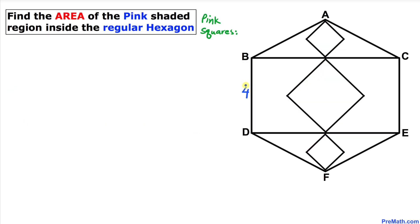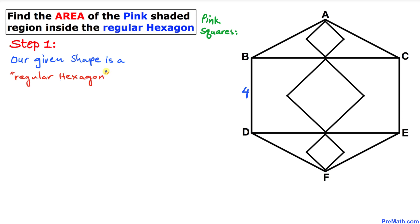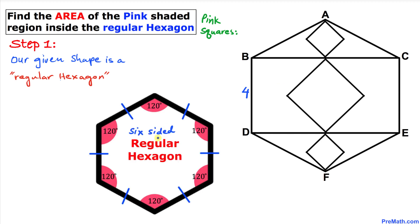Let's get started with our solution. Our given shape is a regular hexagon — a six-sided shape where all sides have equal lengths. So in our case, if length BD is four, then the other sides are four as well, and the interior angles are 120 degrees each.